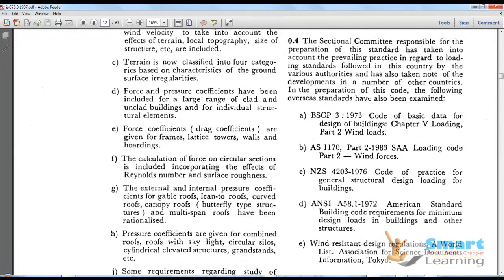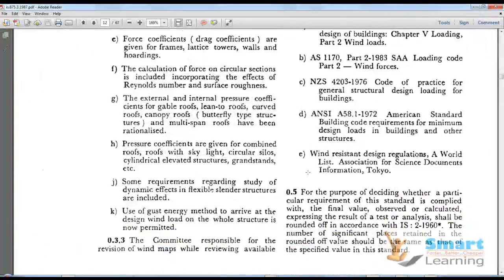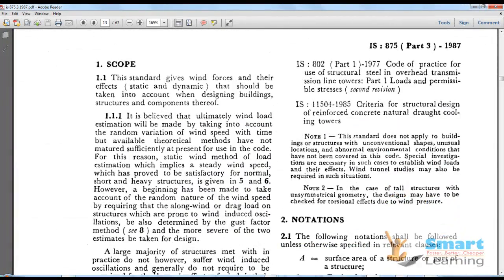Different other country standards are referenced like BH CP 3 1973 code of basic data for design of buildings Chapter 5 Loading Part 2 Wind Loads, AS 1170 Part 2 for wind forces, New Zealand standards, ANSI A58.1 1972 per American standards, and AIJ wind system design regulations from Japan.